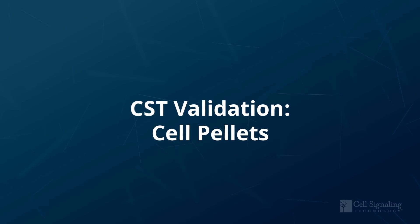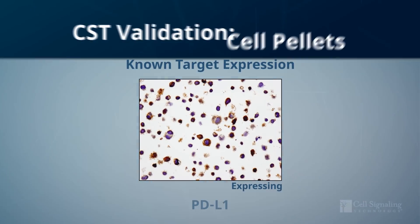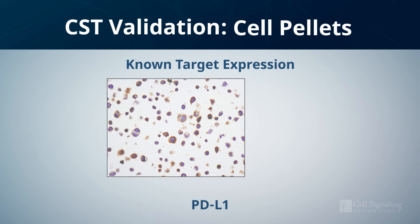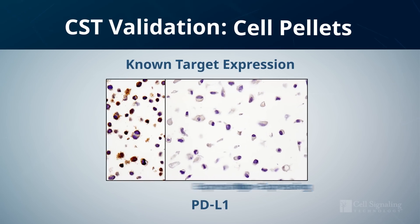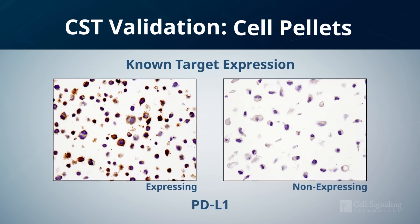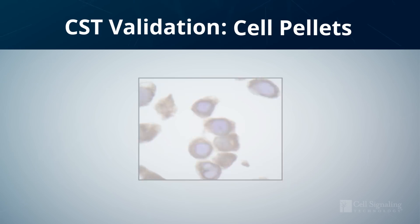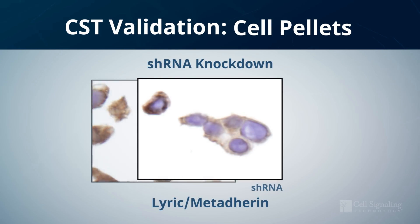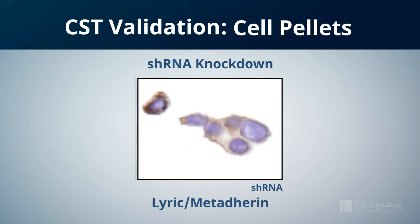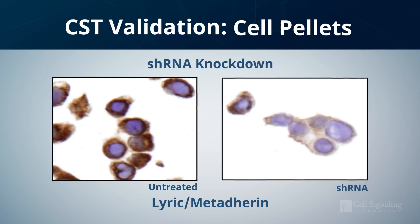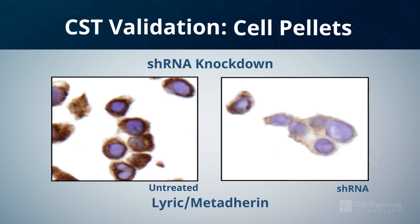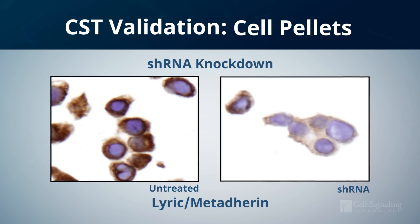First, cell pellets. Paraffin-embedded cell pellets can be used to assess antibody specificity by comparing cell lines known to have different expression levels of the target protein. As an alternative, siRNA or shRNA experiments can be used to vary target expression and to compare staining of control versus knockdown cell pellets.